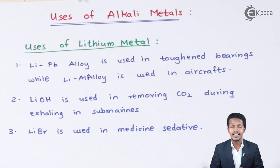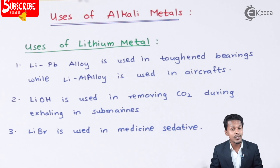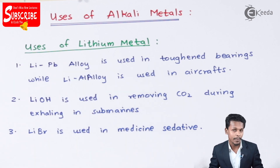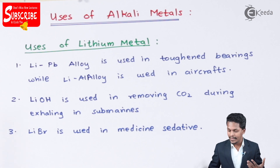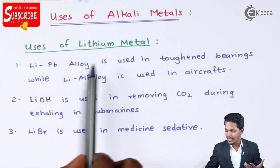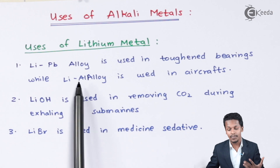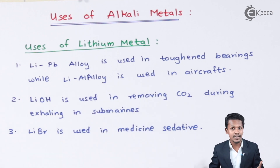We are going to talk about the uses of alkali metals, starting with lithium. Lithium-lead alloy is used in toughening bearings, while lithium-aluminum alloy is used in aircraft.